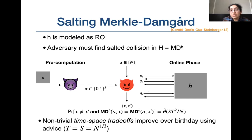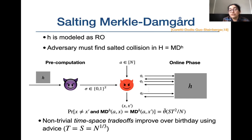Intuitively, when hash functions contain a known structure like MD constructions, adversaries can possibly leverage this knowledge to mount better attacks. Coretti et al. proved this intuition to be true and proved the non-trivial bound of st²/n on collision finding with pre-computation in MD-based hash functions. This bound implies the adversary achieves constant advantage when s and t are of the order of cube root of n, instead of square root of n for monolithic hash functions.